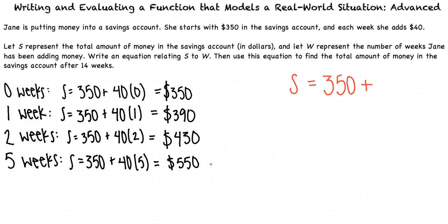These examples can help us find the total amount of money in Jane's savings account after W weeks. Looking at these cases, we can see that after W weeks, the total amount of money will be S equals 350 plus 40W.